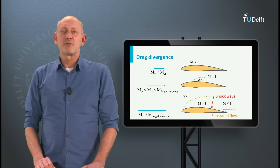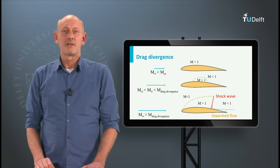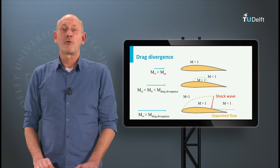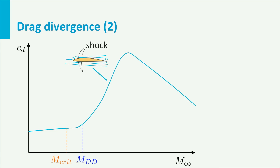The boundary layer will separate when the shock is strong enough, creating a high pressure drag. The Mach number at which this rise in drag starts is called the Mach number for drag divergence. If we further increase the Mach number, the drag rises rapidly until the free stream Mach number has reached the value of 1 and the flow over the entire airfoil is supersonic.